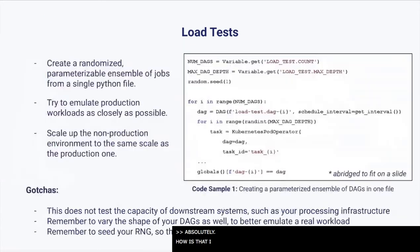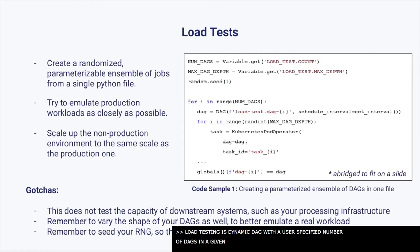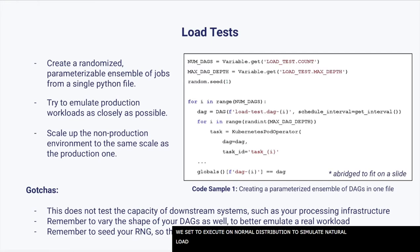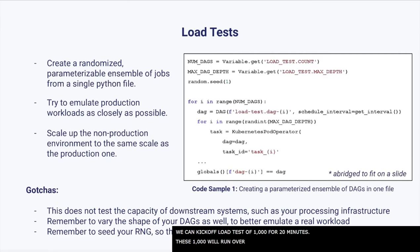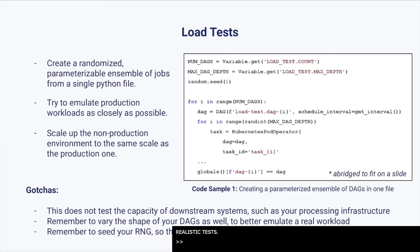Load testing was implemented as a dynamic DAG which, when enabled, generates a user-specified number of DAGs to run in a given duration. The number of DAGs and duration can be parameterized through Airflow variables. We set the DAGs to execute on a normal distribution to simulate natural load that ramps up slowly, runs at peak for a few minutes, and then gradually winds down. For example, we can kick off a load test of 1,000 DAGs for 20 minutes, distributed normally over that period. We also added functionality to randomize the DAG depth to ensure a more realistic test. In summary: unit testing covers DAG logic, smoke testing covers operator functionality, and load testing covers the integrity and scalability of the Airflow environment itself.